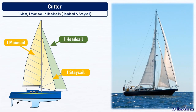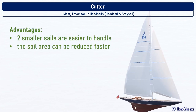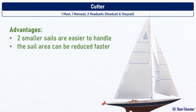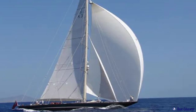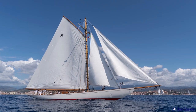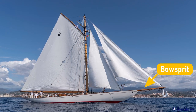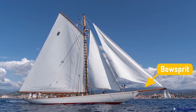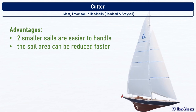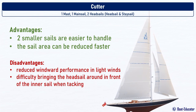Cutter. A cutter rig means two headsails and one mainsail. The larger headsail is called the headsail and the smaller the staysail. The sail area is divided equally between the mainsail and the headsail. The advantage of two smaller headsails is that they are easier to handle and can be stowed faster, or the sail area reduced when the wind increases. In the past, the headsail was often attached to the jib boom, but modern rig designs dispense with the jib boom and instead have a bowsprit to which the jib is tensioned. The bowsprit is a strong spar firmly attached to a ship's hull that protrudes over the bow, like on this classic sail yacht. When the wind increases, the staysail can be lowered to reduce sail area and the ship will still have good balance. The cutter's disadvantages include reduced windward performance in light winds and difficulty bringing the headsail around in front of the inner sail when tacking.